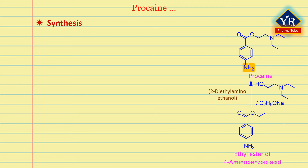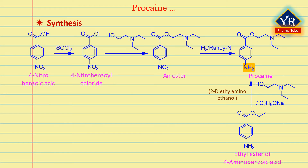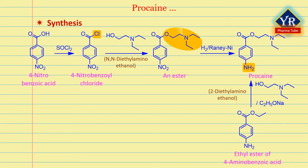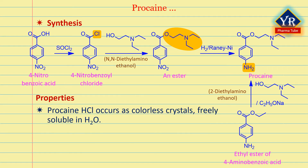The second method of synthesis is by reacting 4-nitrobenzoic acid with thionyl chloride, which gives the acid chloride. This is then esterified with N,N-diethylaminoethanol, followed by subsequent reduction of the nitro group by hydrogenation of the resulting ester into an amino group, which takes place in the presence of Raney nickel catalyst.